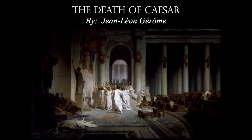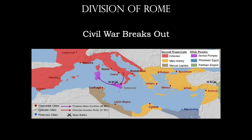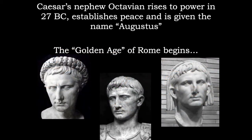We have a great painting of the scene as the senators are leaving the murder scene, and this is what the theater of Pompeii looks like today. Unfortunately, Caesar's death is going to mark the end of the Roman Republic. Civil war breaks out, and you can see there are six different factions trying to gain control of the Roman Empire. But in 27 BC, Caesar's nephew Octavian rises to power, establishes peace, and is given the name Augustus. This marks the beginning of the Golden Age of Rome and the early Empire.